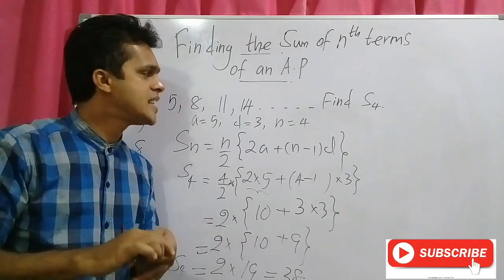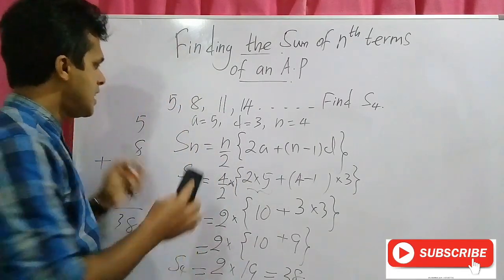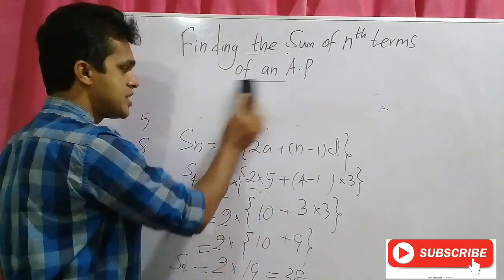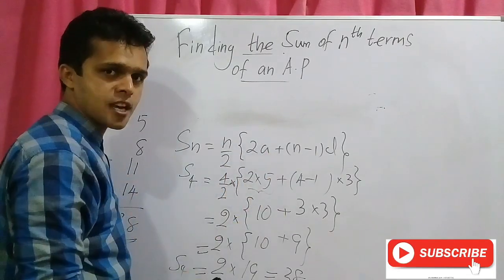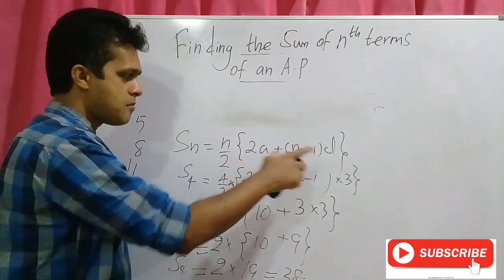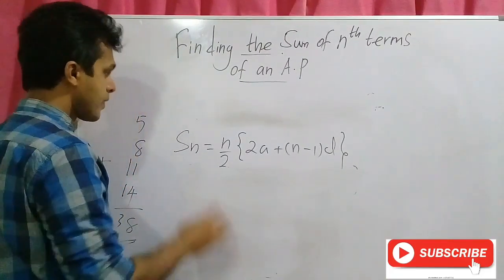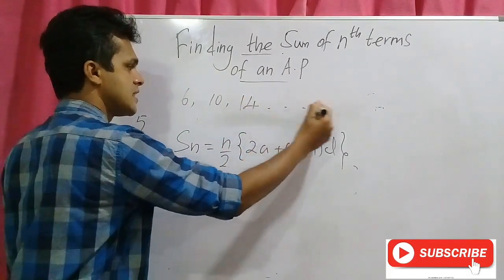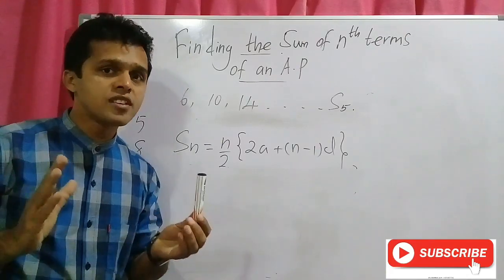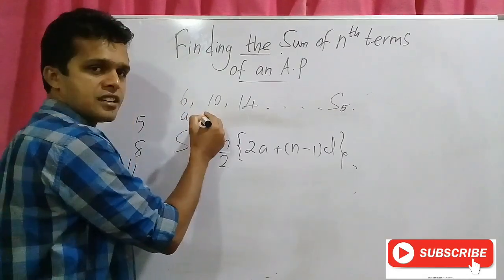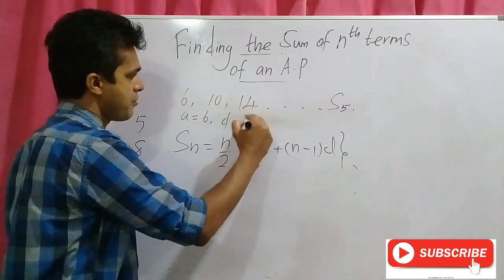Now let's do another example. Don't forget the formula: S_n equals n over 2 times 2a plus n minus 1 times d. For the AP 6, 10, 14, ..., let's find S5 — the sum of the first 5 terms. Here a equals 6 and d equals 10 minus 6, so d equals 4.